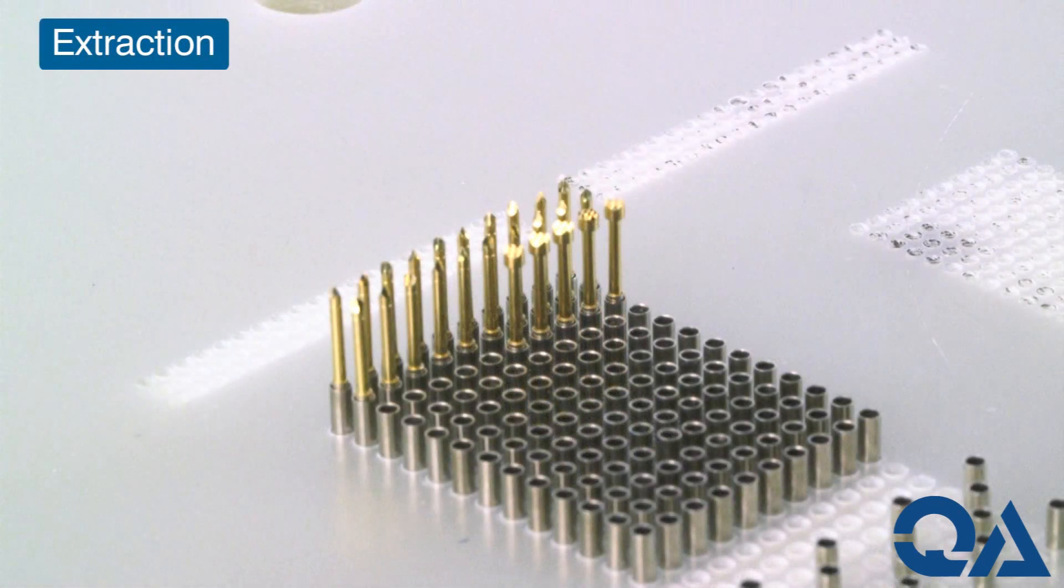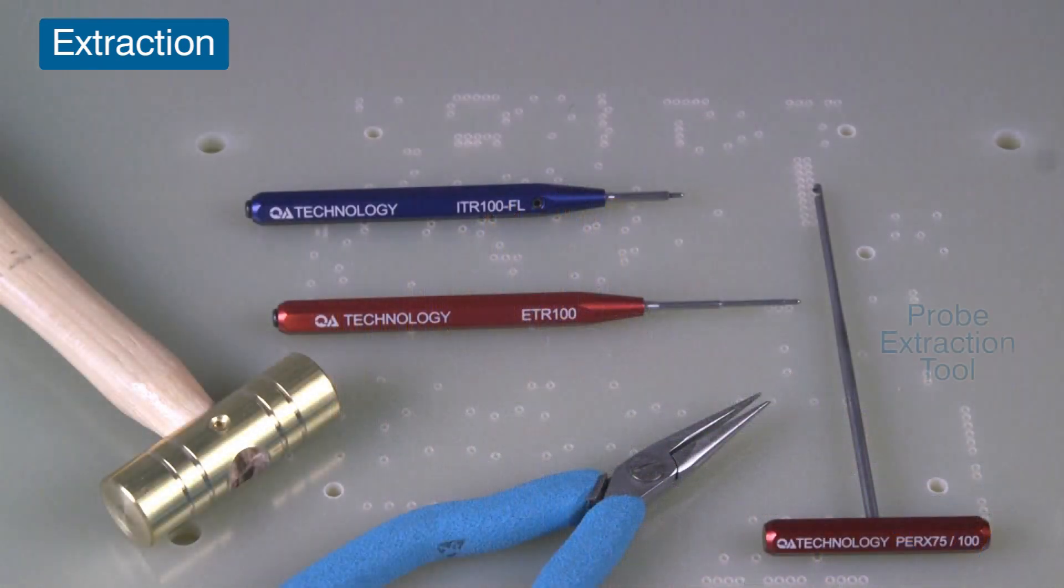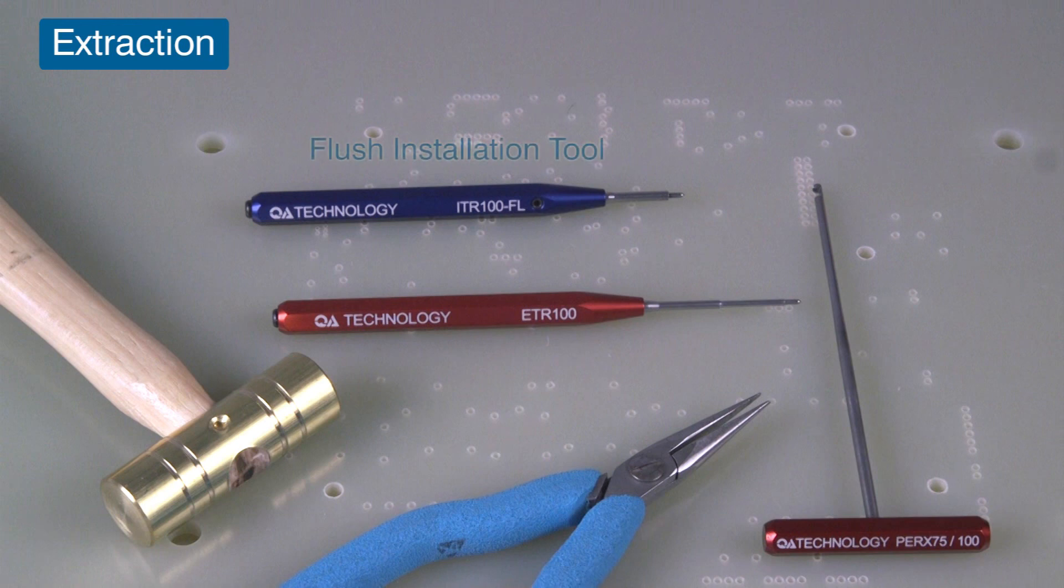There are times when you'll need to replace a worn or damaged probe or socket. Here's a few easy steps for this process. You'll need a probe extraction tool or needle-nose pliers to remove the probe. To remove the socket, you'll need a flush installation tool and an extraction tool.